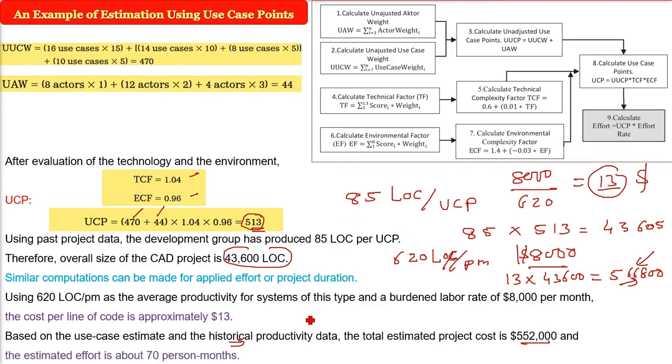Now effort also you have to find out. The estimated effort will be what? There are values we have already found out. So we find out the person month. So you have the line of code 43600. You have 620 LOC per month. Divide them. What do you get? 70 person months. This is the use of UCP. How do you find out the estimation, the cost, effort and duration of a project?